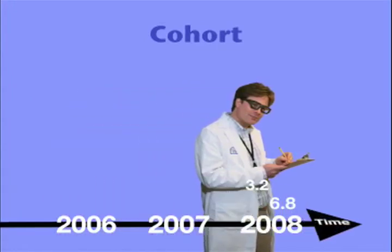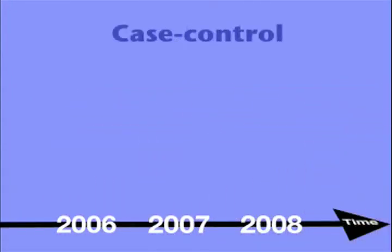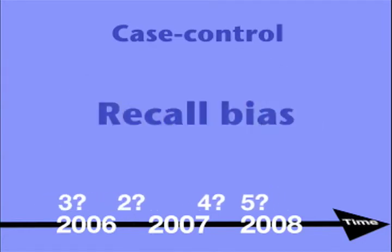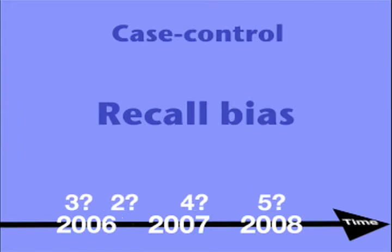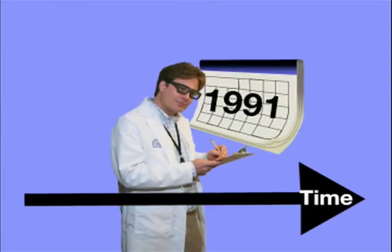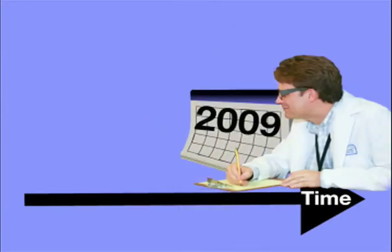Finally, a short comment on so-called retrospective and prospective studies. Traditionally, cohort studies are thought of as being prospective and case-control studies as retrospective. This is because cohort studies were traditionally followed over time, collecting data all the while, while case-control studies required investigators to question cases and controls about their exposures. Because collecting data in this way was subject to recall bias, these studies' results were less trustworthy than those from cohort studies. Hence, prospective studies were thought to be better than retrospective studies. The key, however, is how data are collected: if data are collected in real time, the study is prospective; if one has to go back to collect data, it's retrospective.